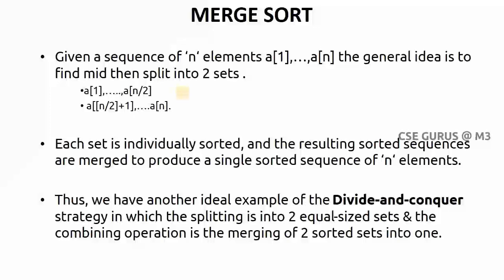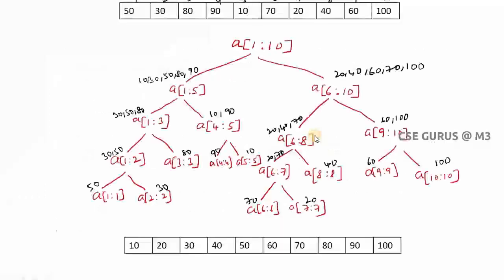I'll take an example so you can understand better. I have taken a set of elements where the index starts from 1, and the total number of elements is 10. I need to sort these elements into an order. The array runs from a[1] to a[10] — those are the initial and last elements, giving us 10 elements total.